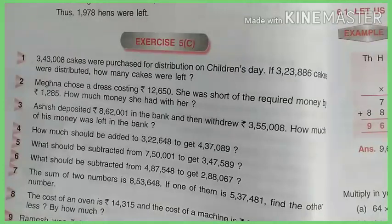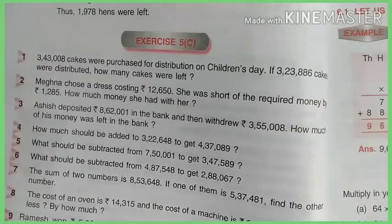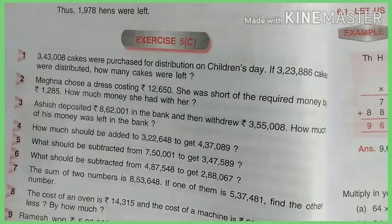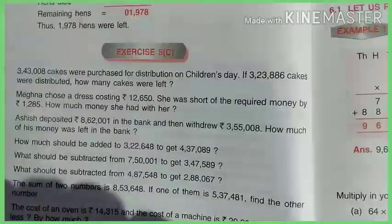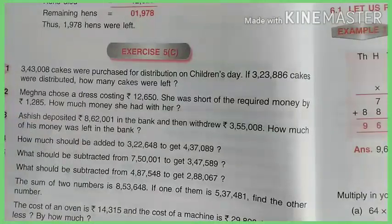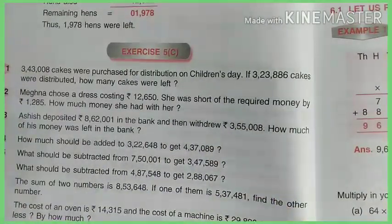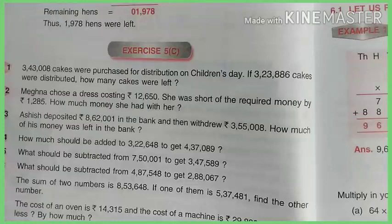Let's do question number 1. Try to understand the question first. The first question is: 343008 cakes were purchased for distribution on Children's Day. Children's Day is on 14th November — we celebrate it on our first Prime Minister Pandit Jawaharlal Nehru's birthday. So on that day, 343008 cakes were purchased. If 323886 cakes were distributed, how many cakes were left? That is the question they are asking.